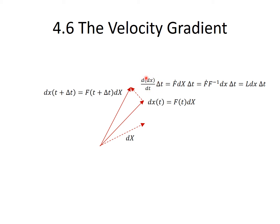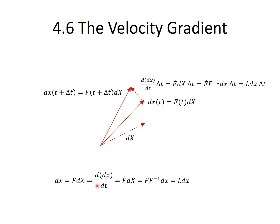When we look at d(dx)/dt, it is equal to Ḟ multiplied by dX, which is dF/dt. We replace dX with F⁻¹ multiplied by dx, and Ḟ F⁻¹ is what we call the velocity gradient, denoted by L. So L is equal to Ḟ F⁻¹. This L relates the rate of change of the vector dx with itself, so d(dx)/dt is equal to L multiplied by dx.